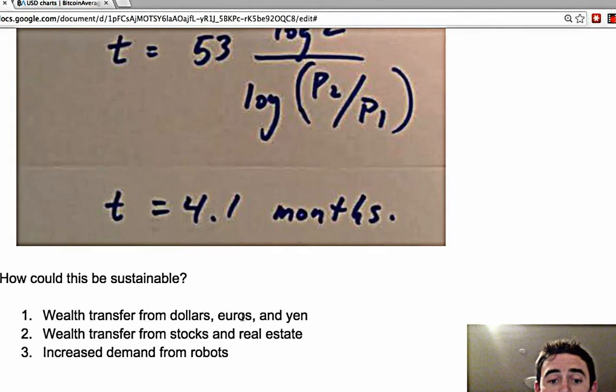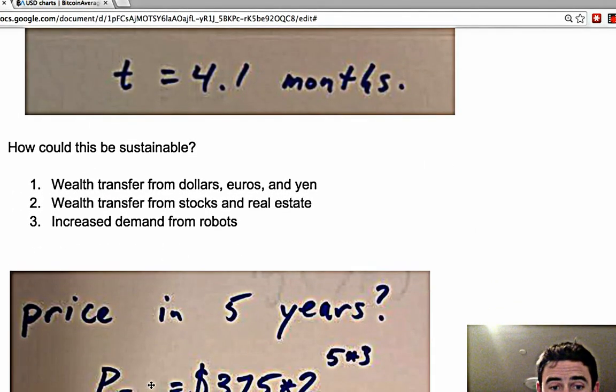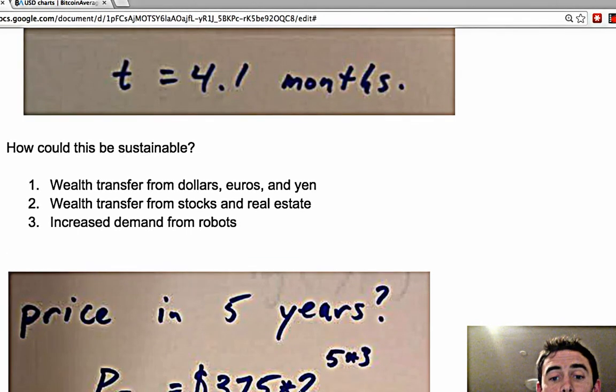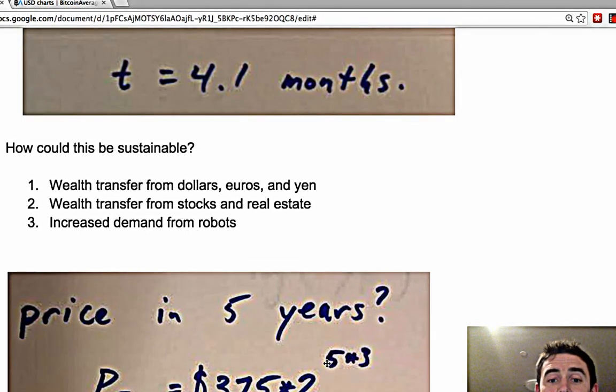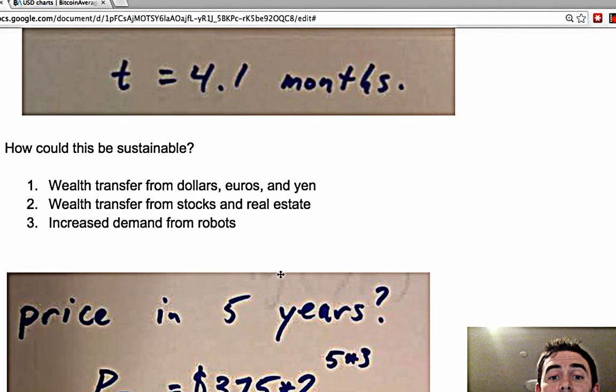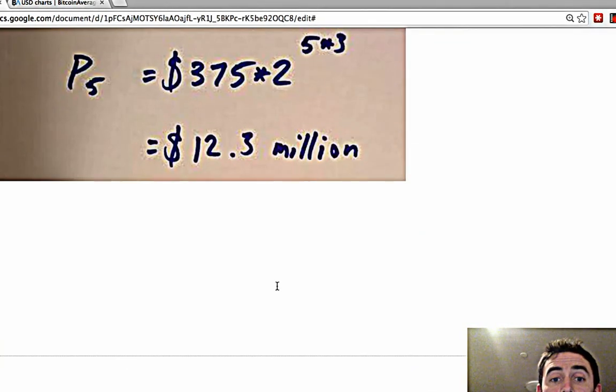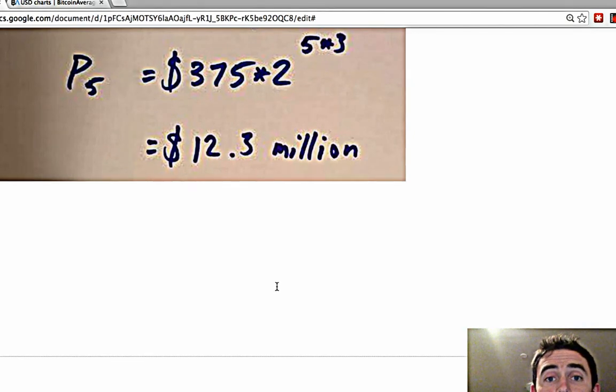We have the formula, so let's just plug it in. P in five years equals $375 times 2 to the power of 15. That's how many times four months goes into five years. What does that equal? Boom, $12.3 million.